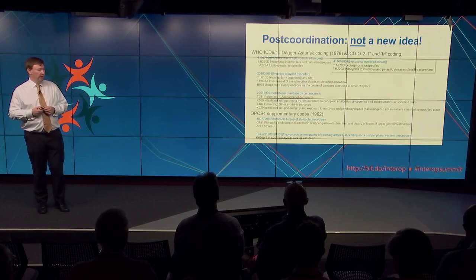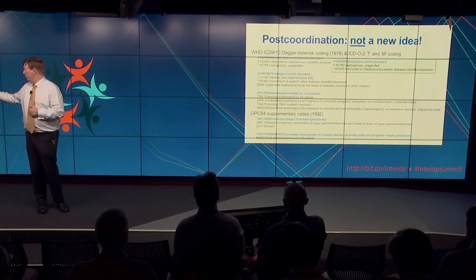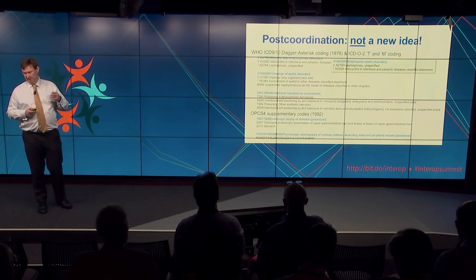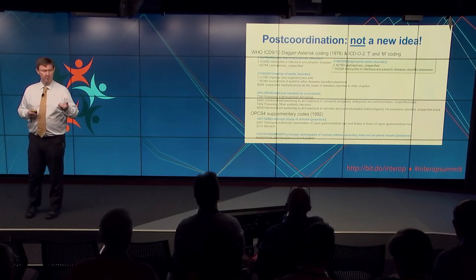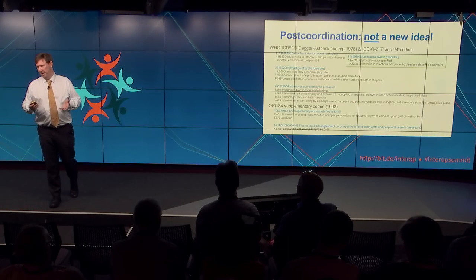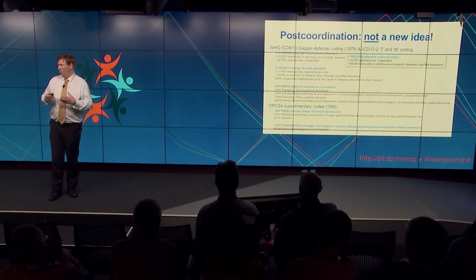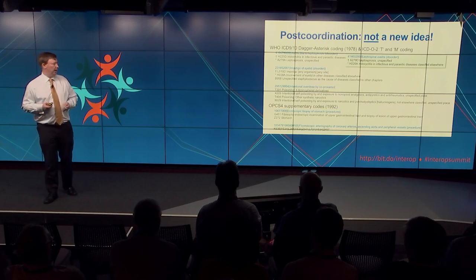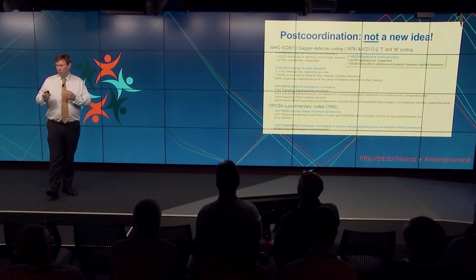For intentional overdose by co-proxamol: two codes tell you in slightly less detail about the overdose of the two drug components of co-proxamol, and the other two codes tell you that it's deliberate. In OPCS, the same story. A fluoroscopic arteriography is a single code in SNOMED, but to capture that reliably in OPCS, SNOMED will say it's a collection of eight different OPCS codes — and not any one of them on their own.